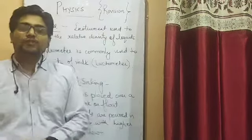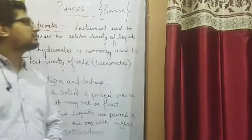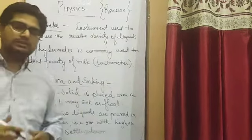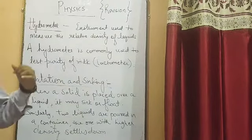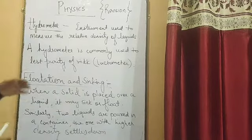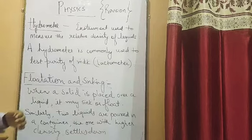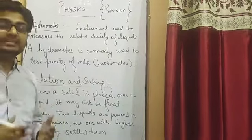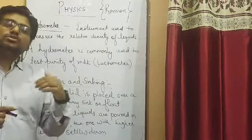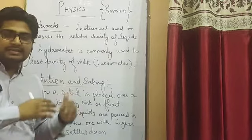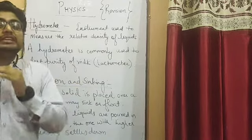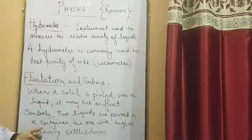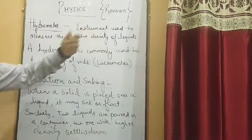Welcome back to physics class. Today we will continue with the revision of the second chapter, that is measurement, which is part of your unit test 2. I want to start with the topic hydrometer. In the previous class we discussed density and relative density, which means the comparison of the density of a substance with the density of water at 4 degrees Celsius. Now, what is a hydrometer?